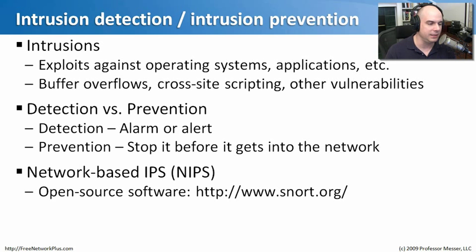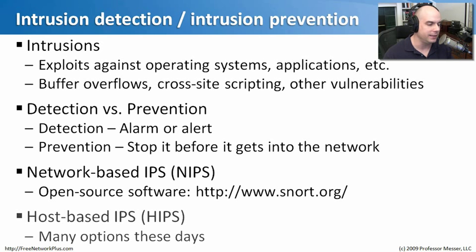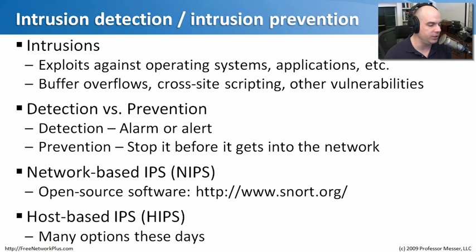There are two different kinds of intrusion-based systems. One is a network-based IPS — there are many open source and commercial options. A very common open source network-based intrusion prevention system is from Snort.org. This product sits on the network, watching packets go by, which is why we call it a network-based IPS. There are also host-based IPSs, which are now almost included with every high-end virus scanning solution — loading a firewall and an intrusion prevention system together, running on a host.